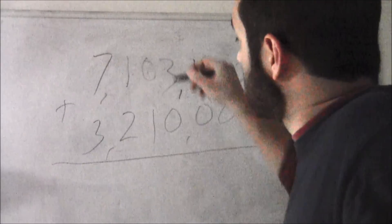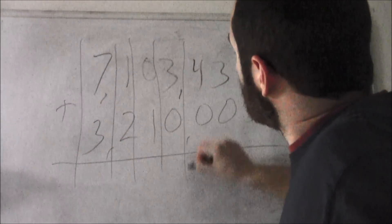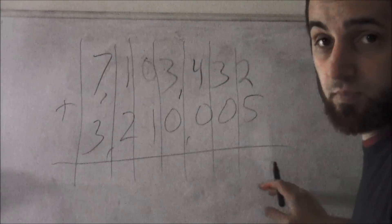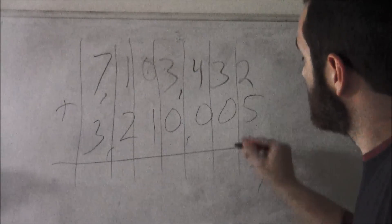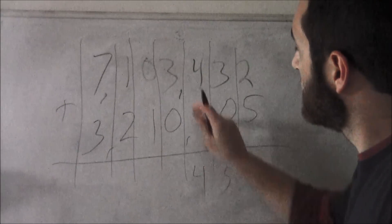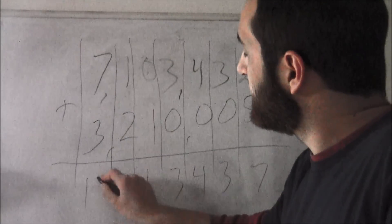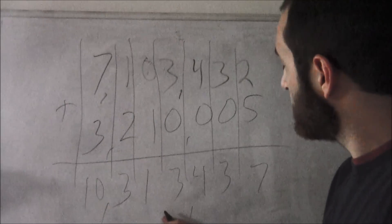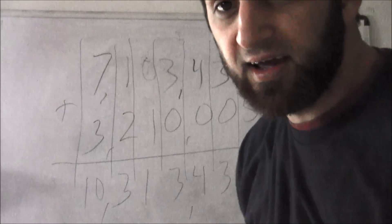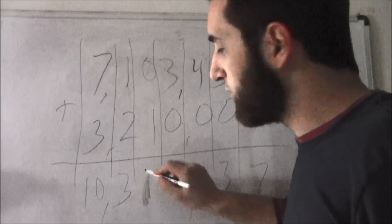You want to make sure each number is straight up and down from one another — lined up on a grid. Two plus five is seven, three plus zero is three, four plus zero is four, three plus zero is three, zero plus one is one, two plus one is three, seven plus three is ten. So your answer is ten million, three hundred and thirteen thousand, four hundred and thirty seven. Hope you guys like that, thank you.